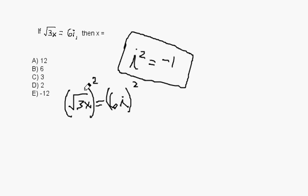What is the square root of 3x squared? Well, the square cancels out this square root, so we end up just with 3x. And what is 6i squared? Well, 6 squared is 36.